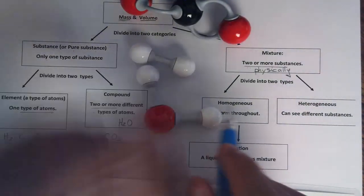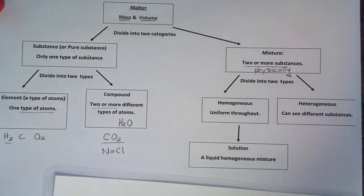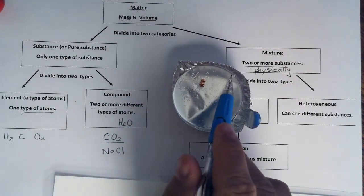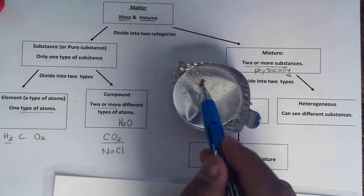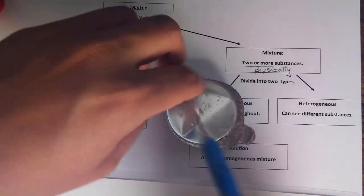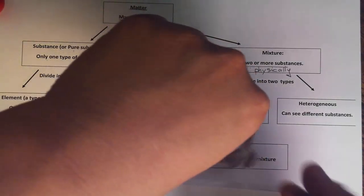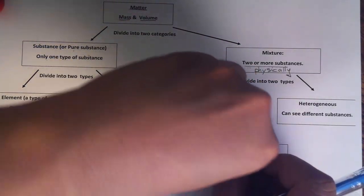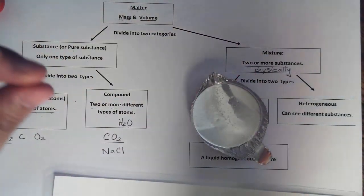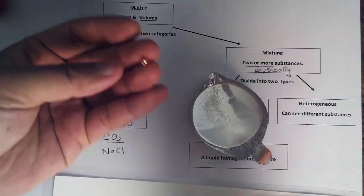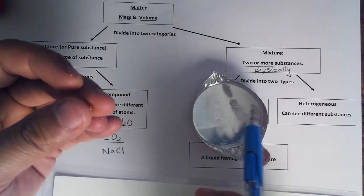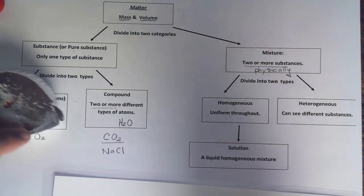At the macroscopic level, I have a tray which consists of aluminum, copper, and sodium chloride. Notice how they are physically mixed together. And I can physically separate them out. There you go — I separate the components, or the substances: copper, sodium chloride (which is a compound), and aluminum (which is an element). So that is a mixture.